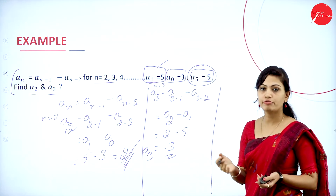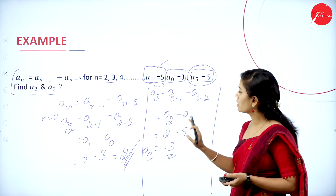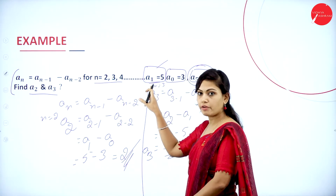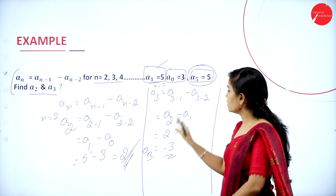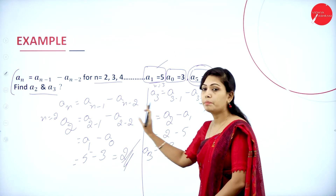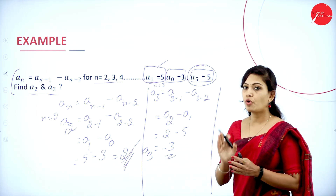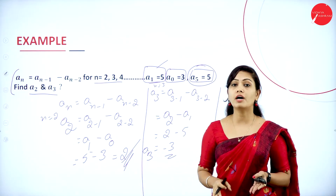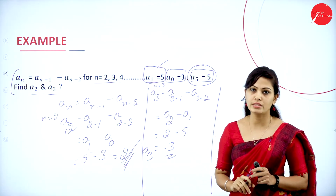To find the value of a2, you need to know the value of a1 — that is the previous value. And to find the value of a3, you need to know the value of a2 — the previous term. That is called as sequence: if you want to know the exact number, you need to know the value of previous numbers.